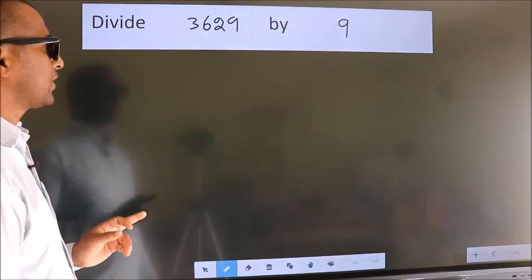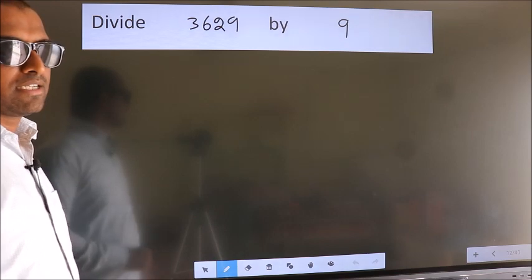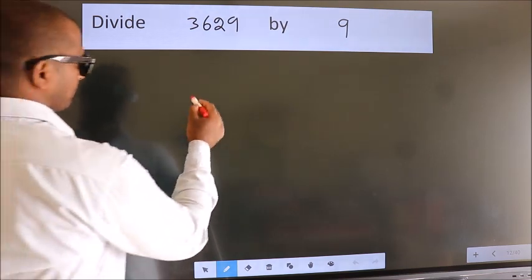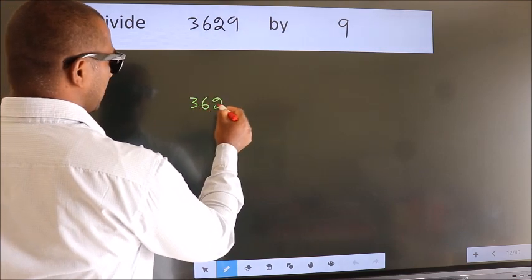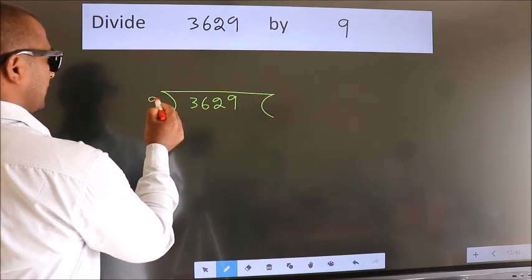Divide 3629 by 9. To do this division, we should frame it in this way. 3629 here, 9 here.